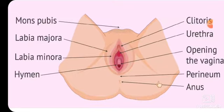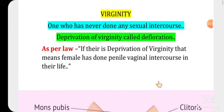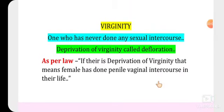The hymen has an aperture through which menstrual blood comes, but in imperforated hymen, that aperture is absent. So the hymen should have at least one opening through which menstrual blood comes out. As per law, if the hymen is fully torn or ruptured before marriage, the male can use it to prove or disprove whether penile-vaginal intercourse occurred before marriage.